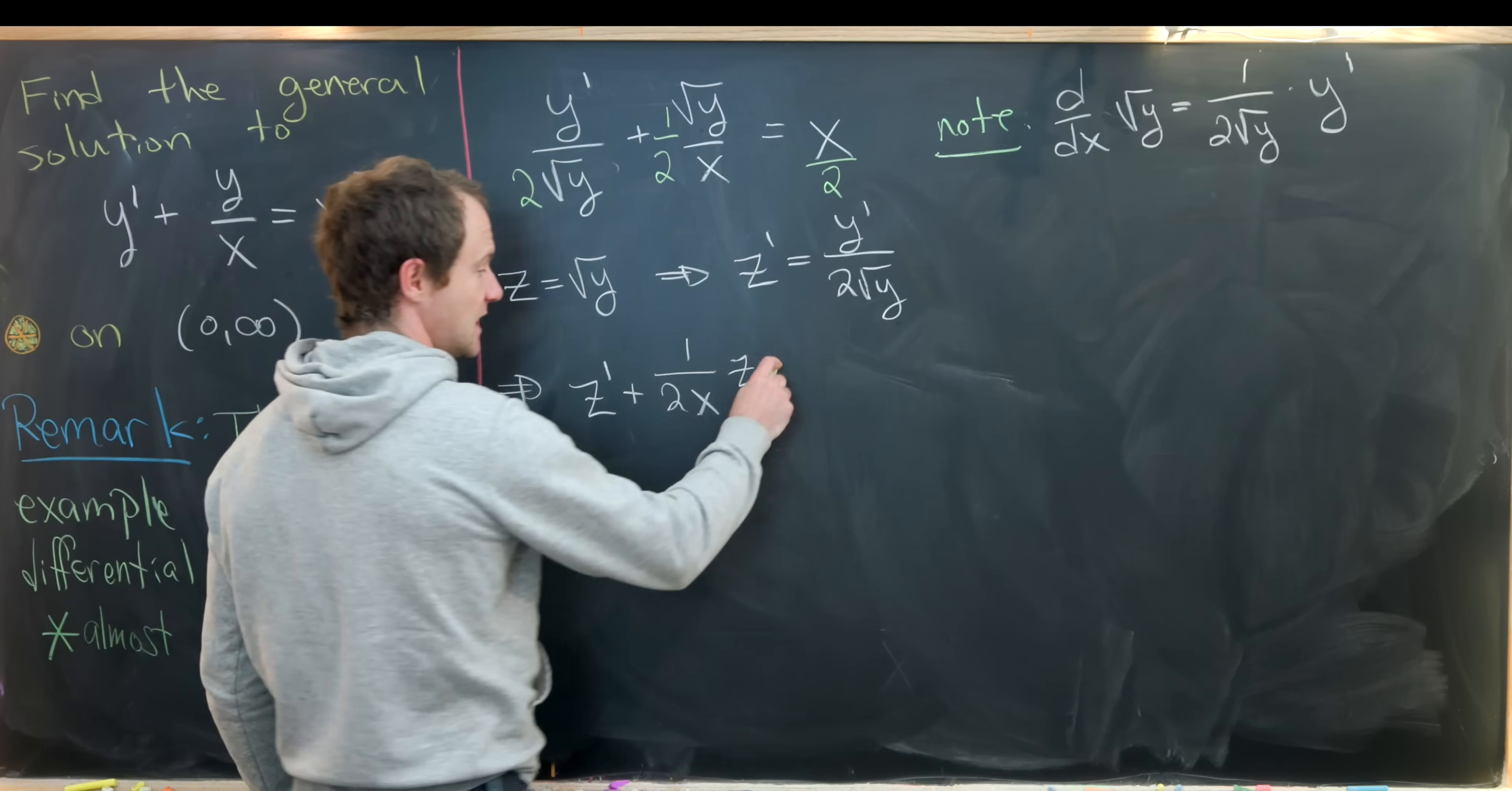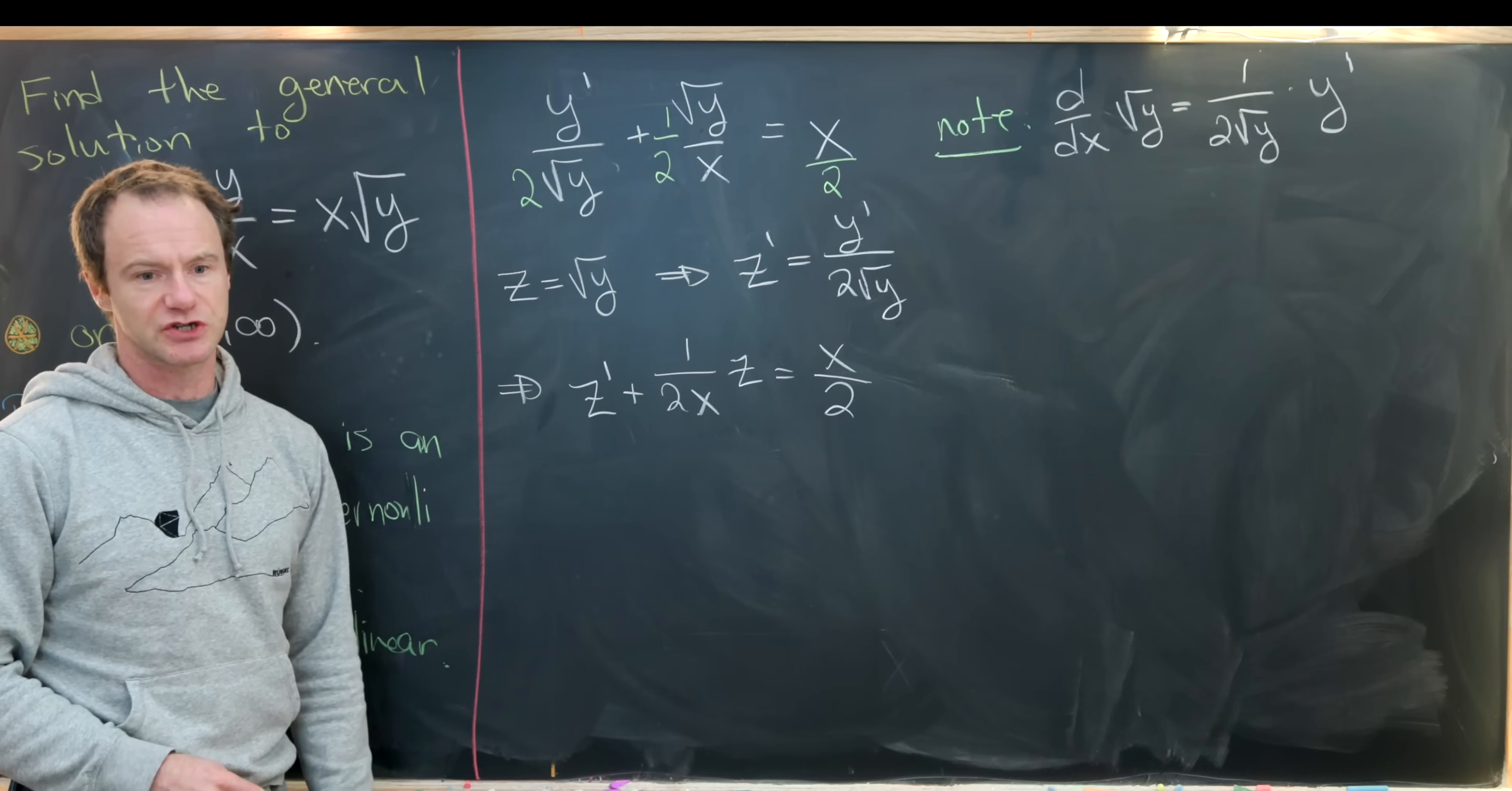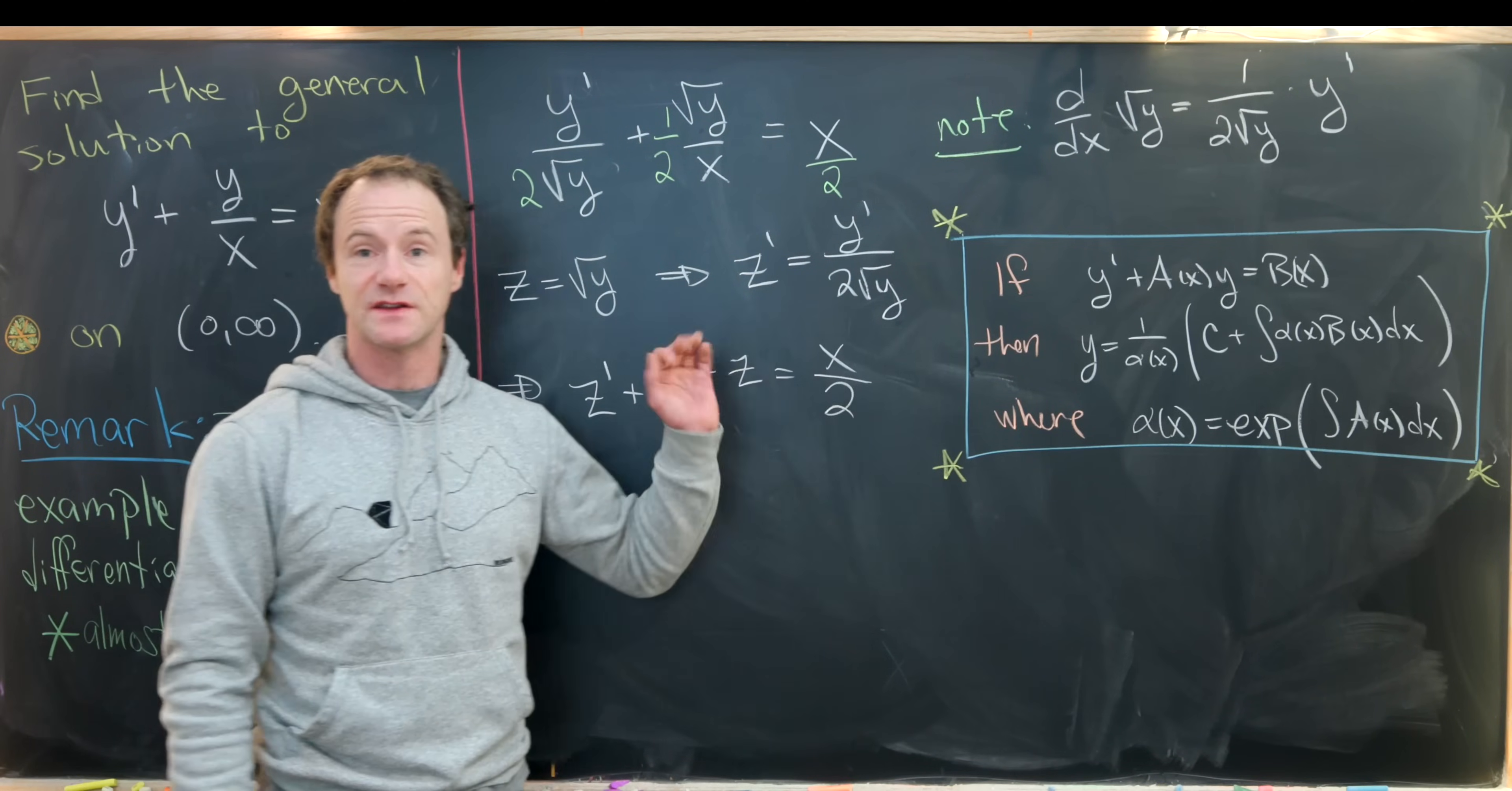We've got this extra two here that we had to include, equals x over two. Now we have an honest to goodness first order linear differential equation. There's a simple formula for solving this type of differential equation.